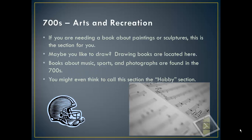The 700s are the arts and recreation section. If you're looking for books about paintings or sculptures, this might be your place. Drawing books, which I know are very popular among elementary age students, can be found here. Books about music, sports, and photography can all be found here as well. You might even think about this section as being the hobby section.